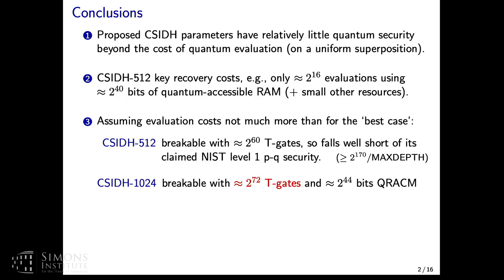CSIDH-512 would be breakable with about 2 to the 60 T gates and other cheaper Clifford gates, and that would mean it would fall well short of the claimed or targeted NIST level 1 post-quantum security. For NIST level 1, you need to be secure against attacks by quantum circuits with at least 2 to the 170 over max depth T gates or quantum gates.